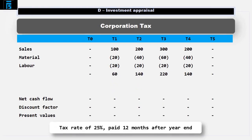If, on the other hand, the question had said something like tax is payable at 25% twelve months after the end of the year to which the cash flows relate, we would simply delay the cash flows by a year.